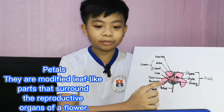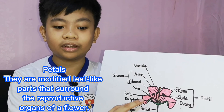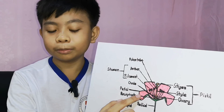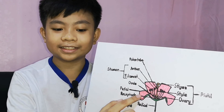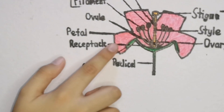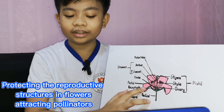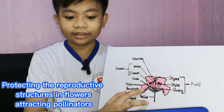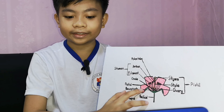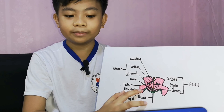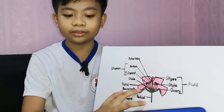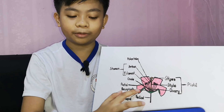Petals. They are modified leaf-like parts that surround the reproductive organs of a flower. Petals are the brightest and most colorful parts of a flower that distinguish them from other parts. The function of petals is to protect the reproductive structures in a flower, attracting pollinators like insects, bees, wasps, butterflies, and other animals to transfer pollen from the male to the female reproductive part of a flower.